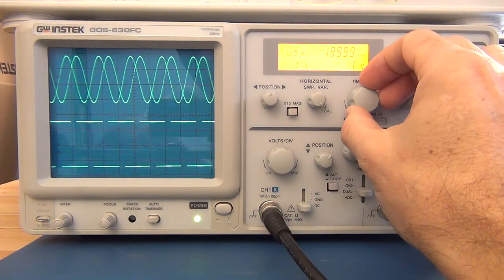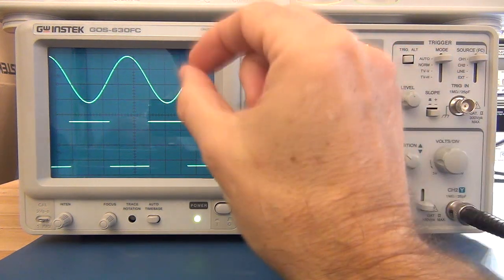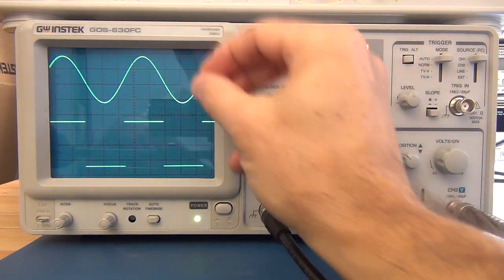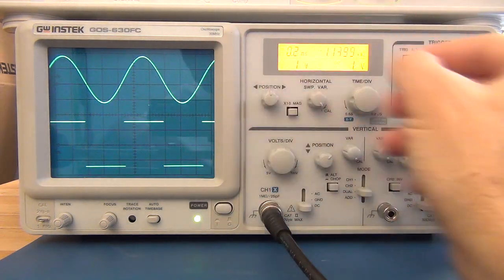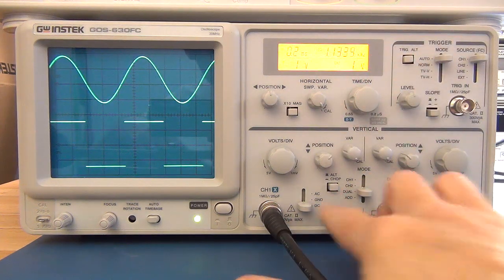So that's where the chop is better. Once you start stepping up your time base, however, you're going to get a better display once you go to the alternate. You get a brighter display. You can't see that clearly here, but it certainly is the case. So that's what your alternate and your chop is for.